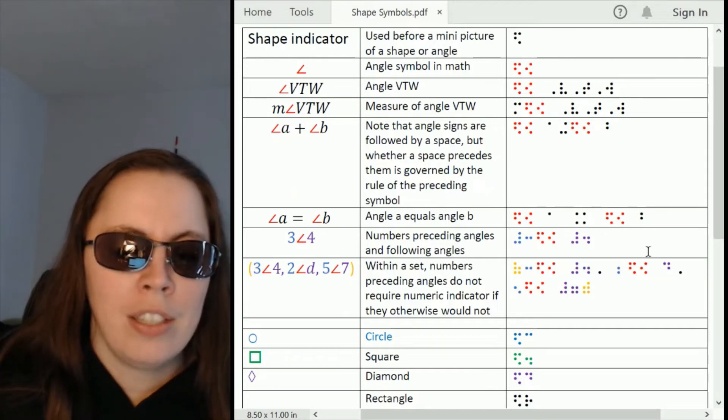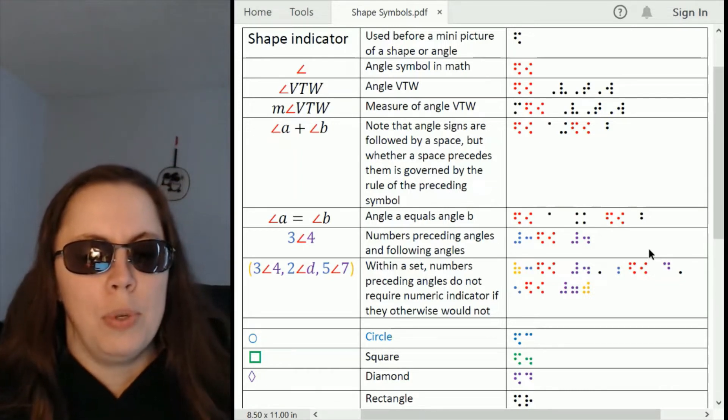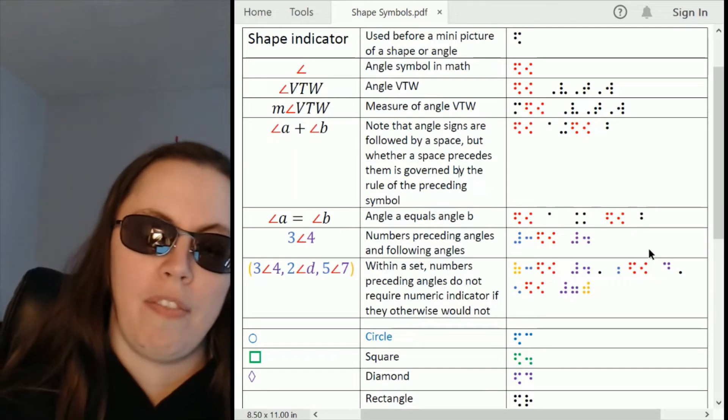But when it's an angle and its label or an angle with a measure, then you do need that space between the angle symbol and the label that follows it specifically.